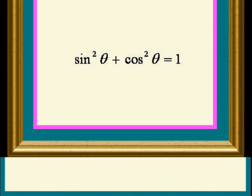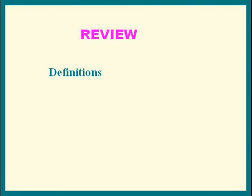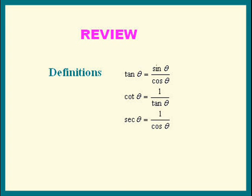First, let's review the definitions of tangent, cotangent, secant, and cosecant. This is from lesson 1. Tangent is defined to be sine over cosine. Cotangent is 1 over tangent, and that's the same as cosine over sine. Secant is 1 over cosine, and cosecant is 1 over sine.